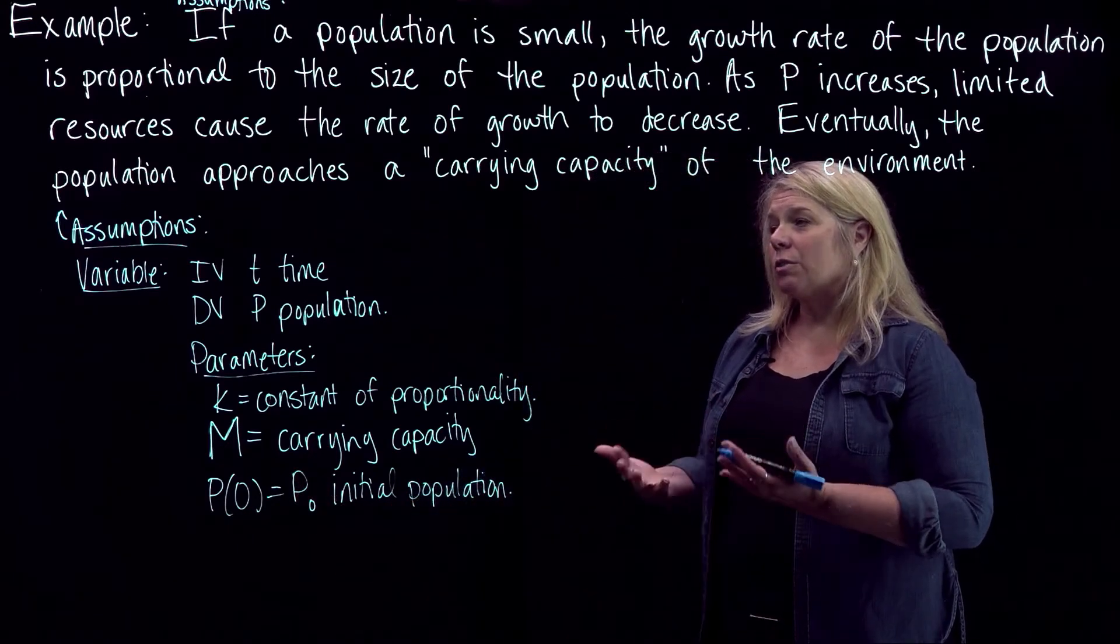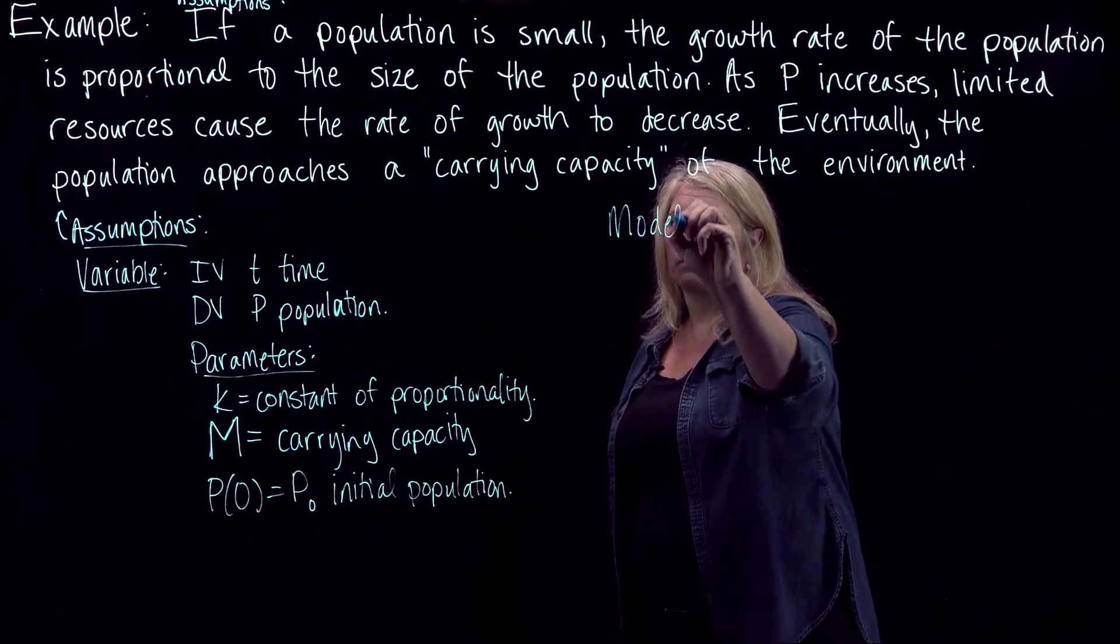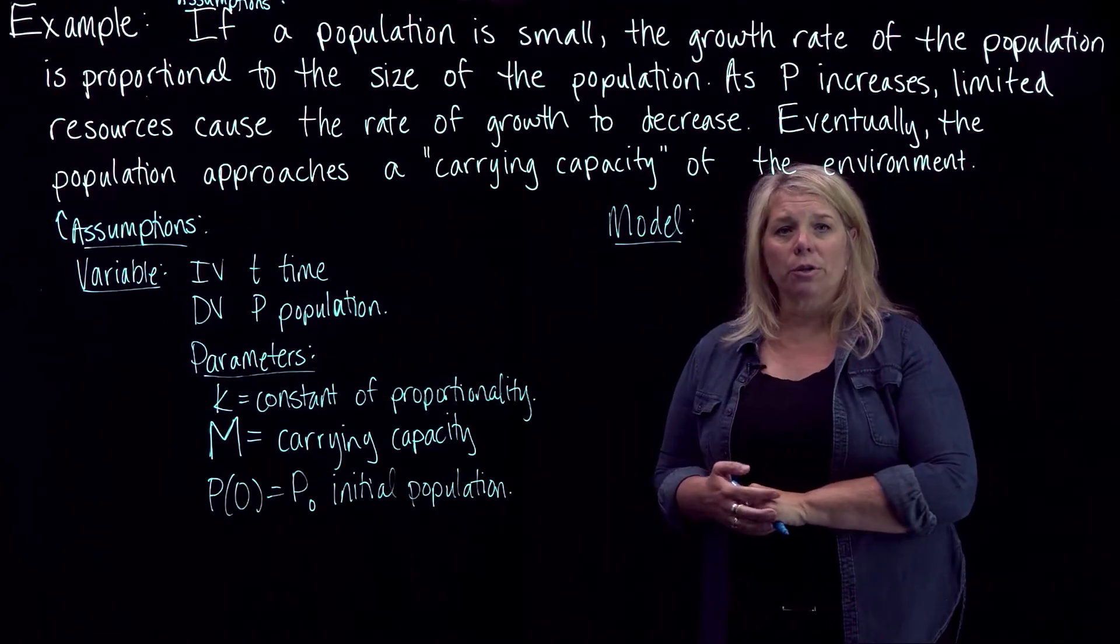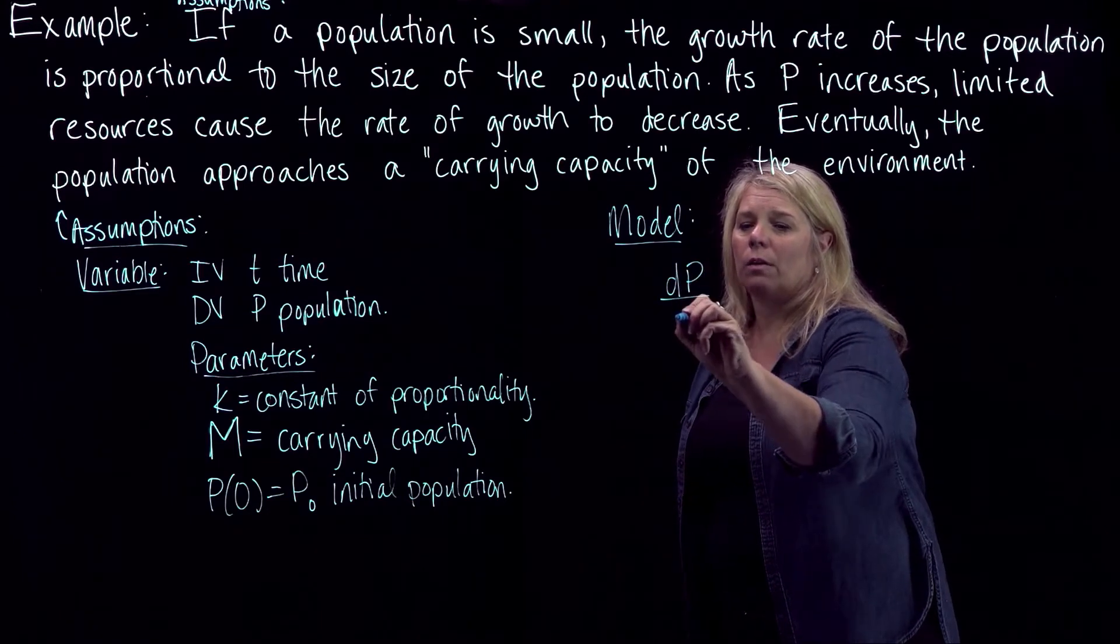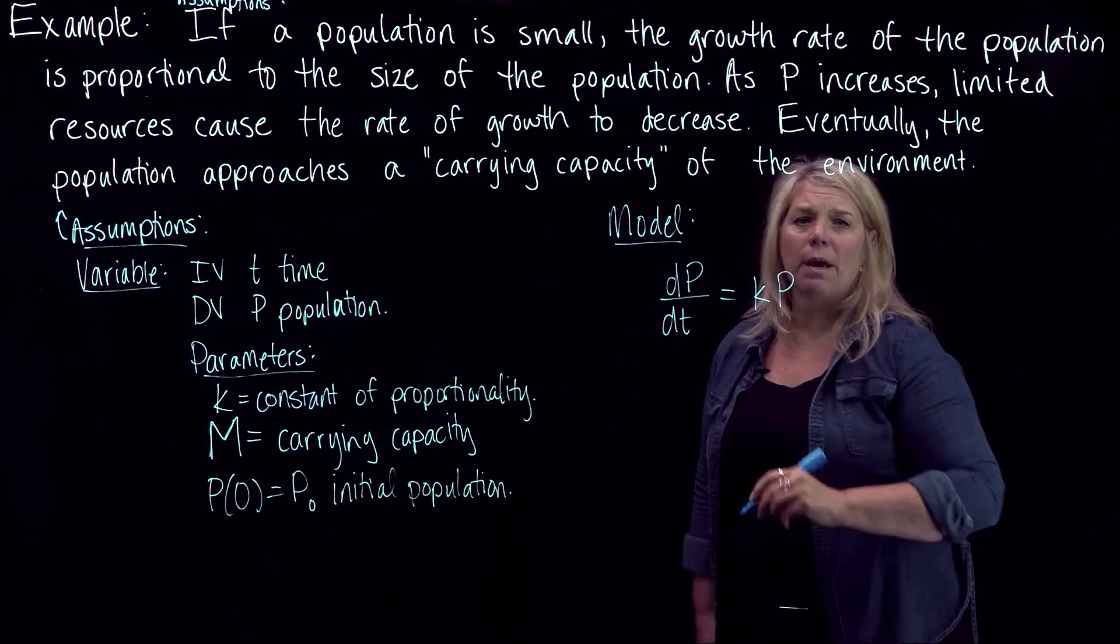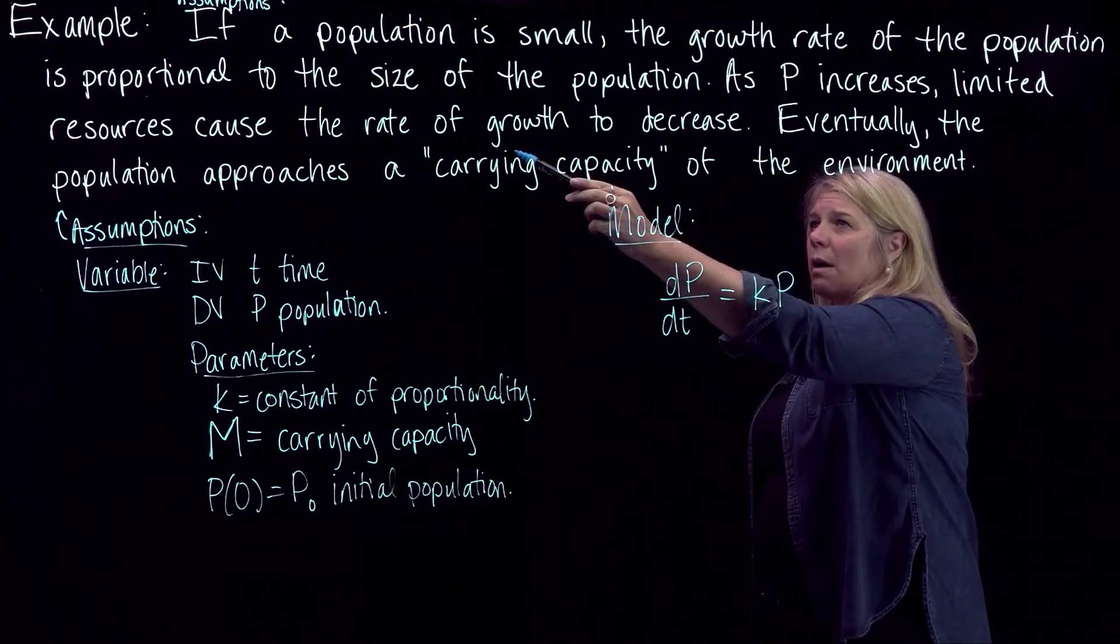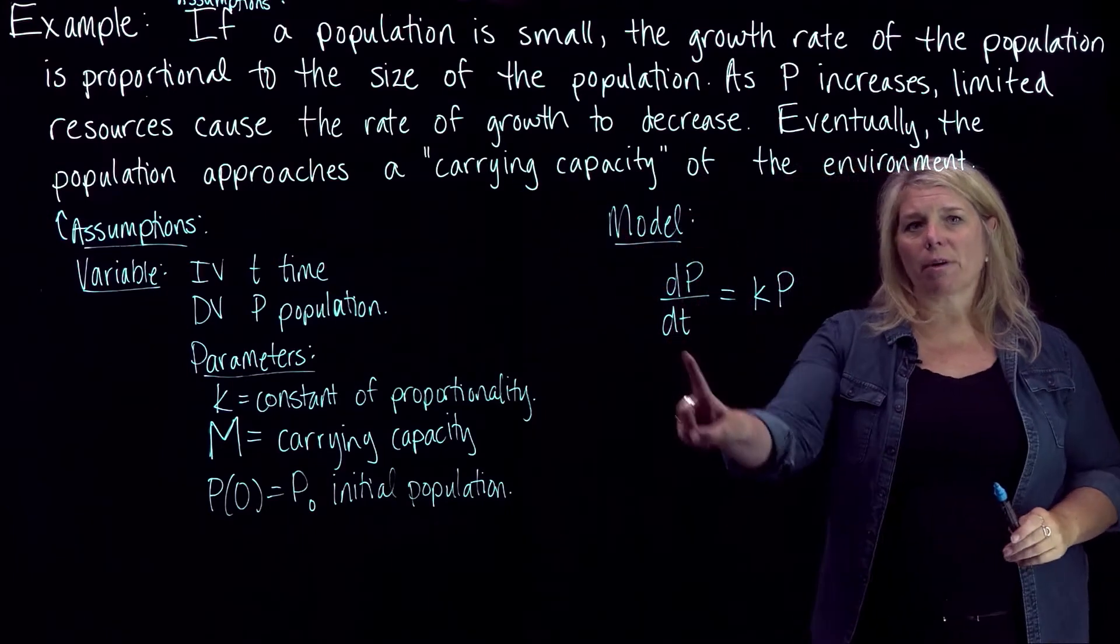We want to describe a model here. So we want to write an equation that describes this model. So in the last video we looked at a rate of growth of a population that was proportional to the size of the population. So we looked at a model that was like this. And so basically what we want to do is modify that to have this other factor that talks about as the size of the population increases, the limited resources cause this rate of growth to decrease.